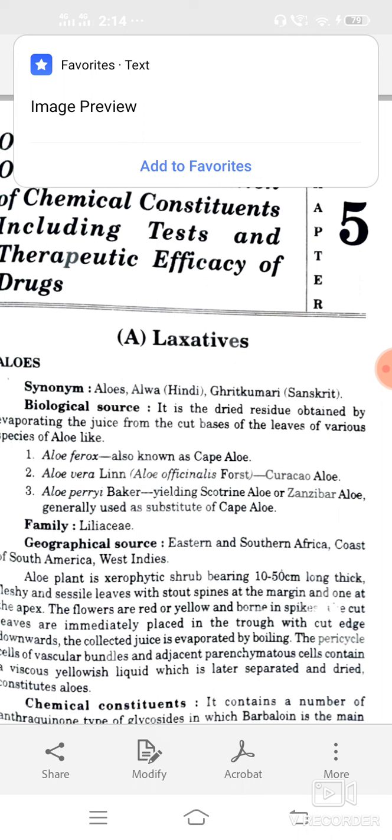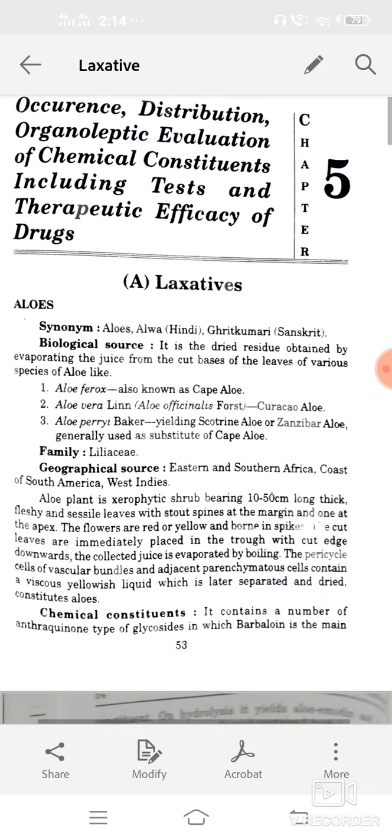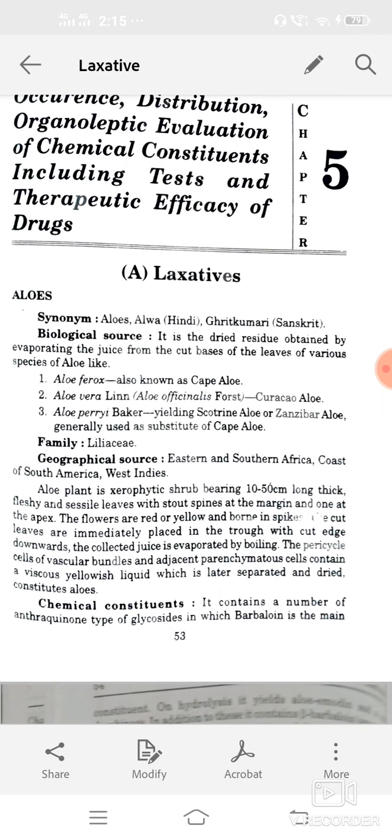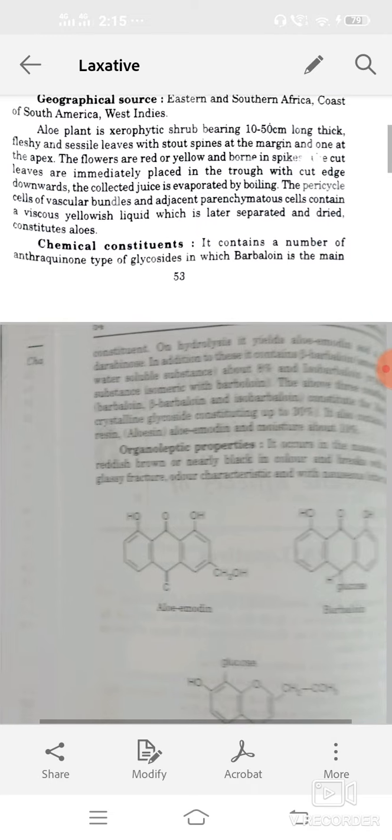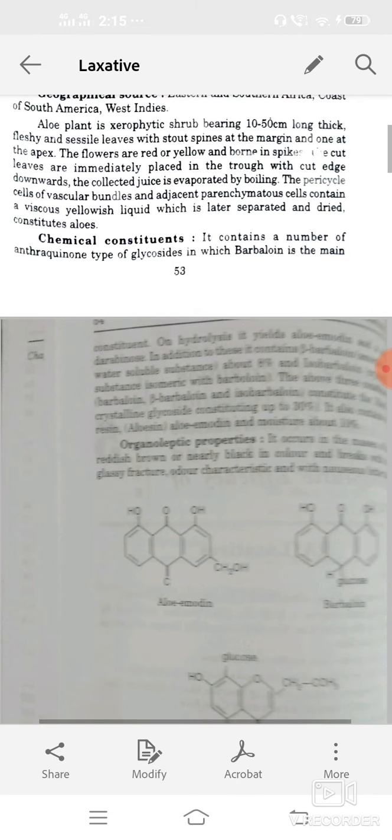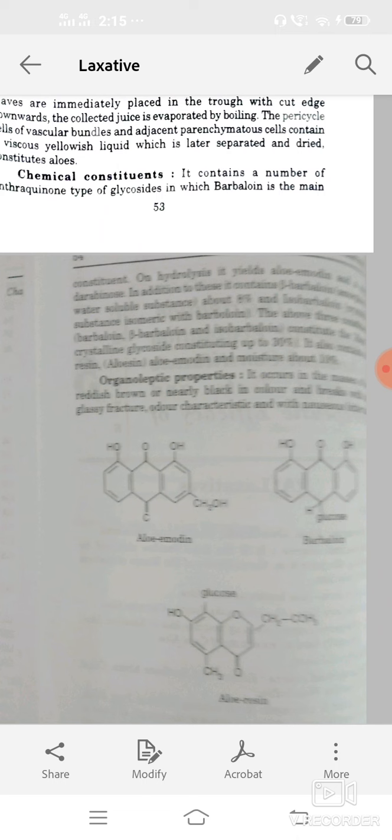Chemical constituents: it consists of a number of anthraquinone type of glycosides, that is barbaloin. Barbaloin is the main constituent. Other constituents on hydrolysis: it yields aloe emodins, arabinose, beta-barbaloin, and isobarbaloin. Beta-barbaloin is amorphous substance, isomeric with barbaloin.